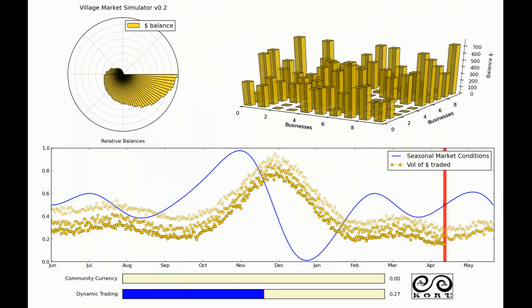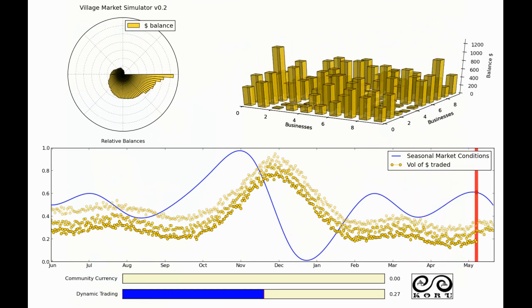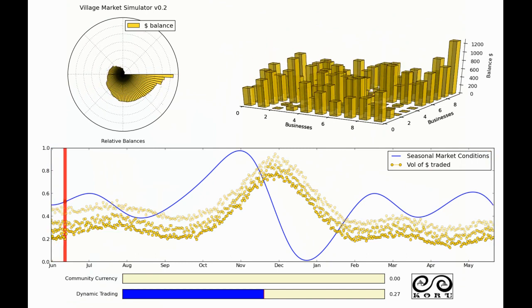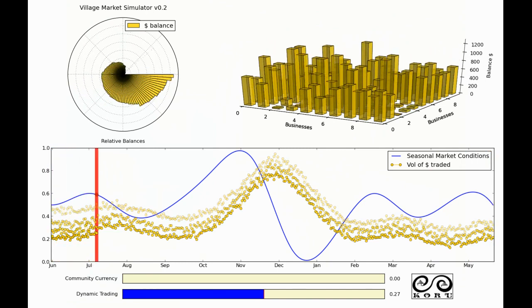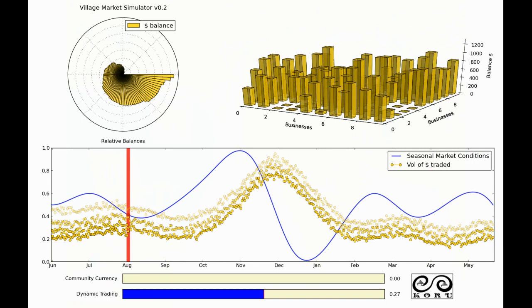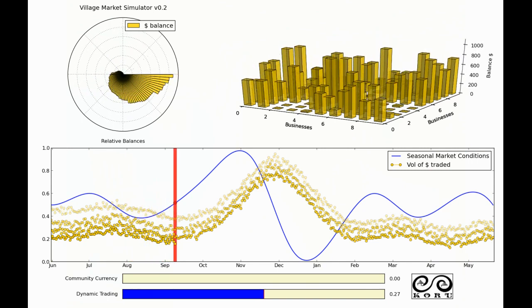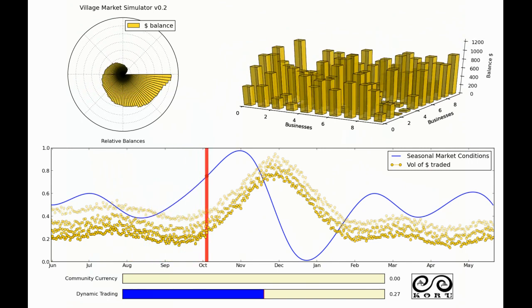So as we start the next year we see it follows the same pattern. There's a little bit of oscillation then a big oscillation up in December and then a big crash in January. And again each year a little bit of money starts leaving the system.